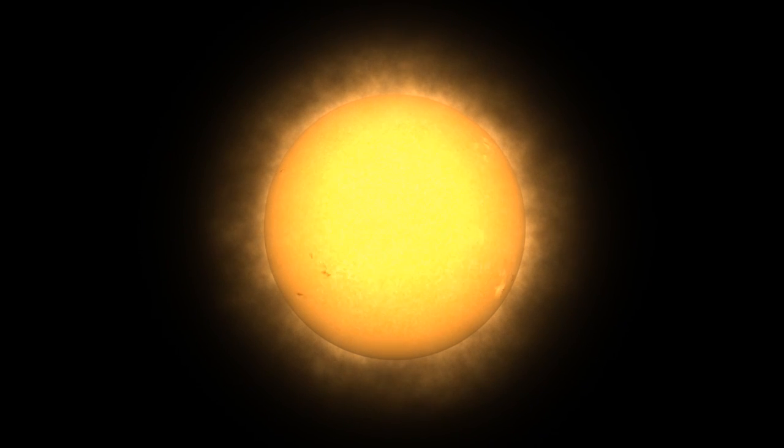During one cycle, the number of sunspots, a good indicator of solar activity, goes from low to high and back down to low.